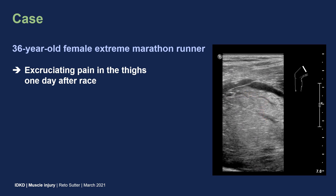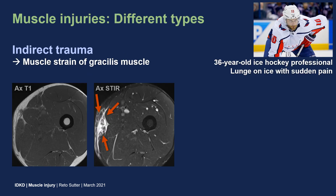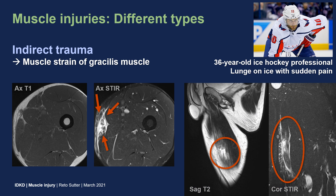So what is our suspected diagnosis? Some form of muscle injury. Let's first look at the different types of muscle injury that we can encounter. The first type is indirect trauma — this is the most common muscle injury. Often the myotendinous junction is injured as this is the most vulnerable part during eccentric contraction of the muscle. This was a case of a young ice hockey professional who lunged on the ice with resulting sudden pain. At MRI we see a muscle strain of the gracilis muscle with a partial tear seen nicely at the sagittal T2 and a lot of surrounding hematoma.